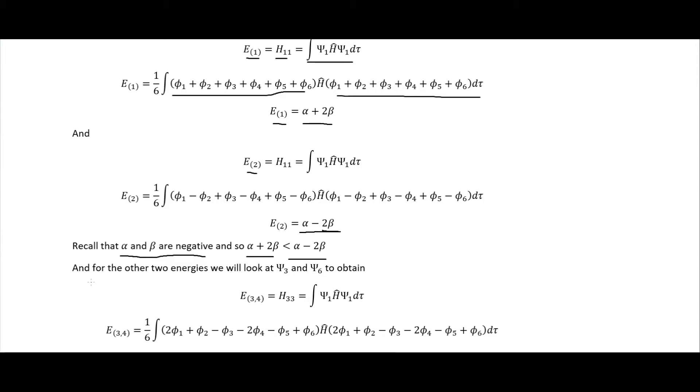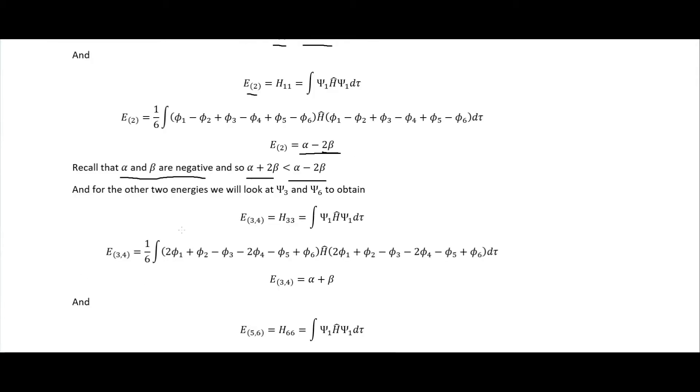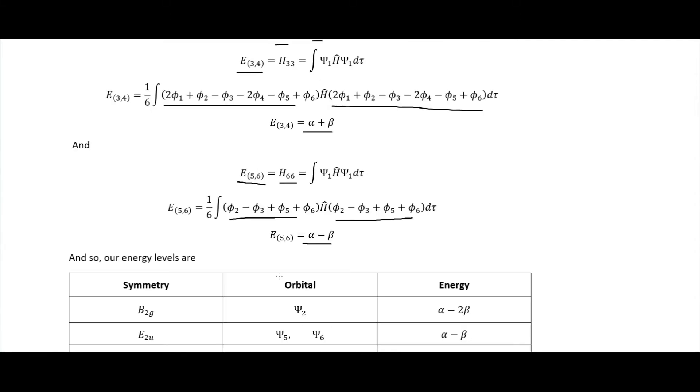For the other two energies, we evaluate ψ₃ (since ψ₄ is degenerate with it) and ψ₆ (since ψ₅ is degenerate with it). For E₍₃,₄₎ = H₃₃, substituting the SAGOs gives α + β. For E₍₅,₆₎ = H₆₆, substituting the SAGOs gives α − β.